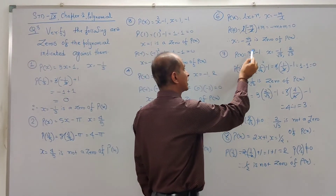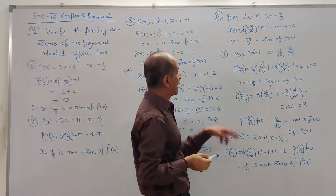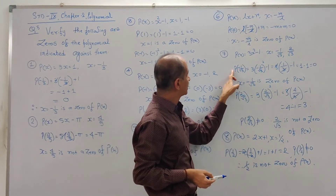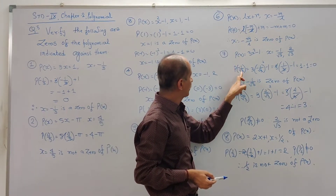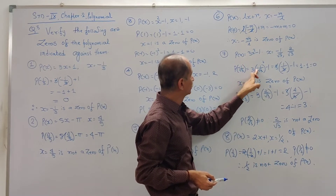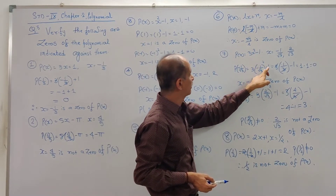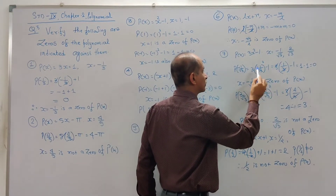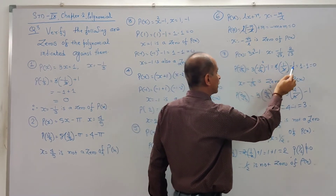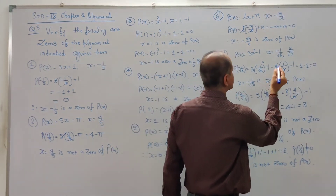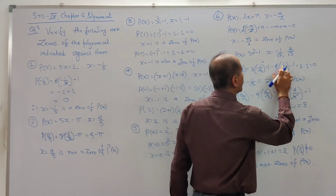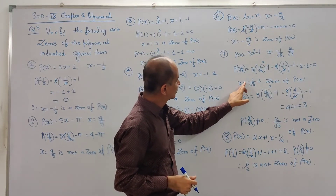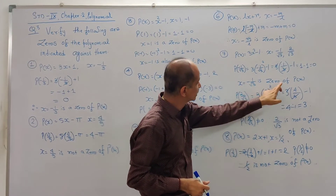Now P(x) = 3x² - 1. We check x = -1/√3. P(-1/√3) = 3 × (-1/√3)² - 1 = 3 × (1/3) - 1. Since (√3)² = 3, the 3s cancel, giving 1 - 1 = 0. That's why x = -1/√3 is a zero of the polynomial.